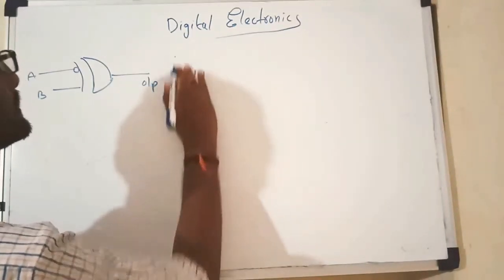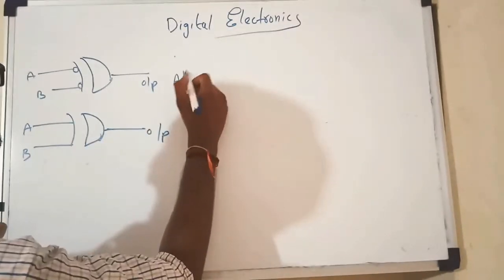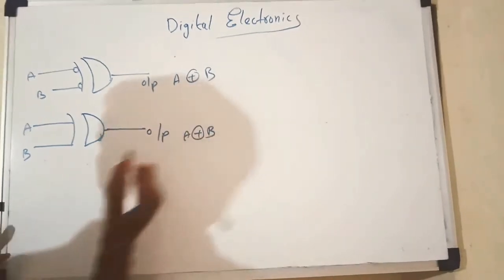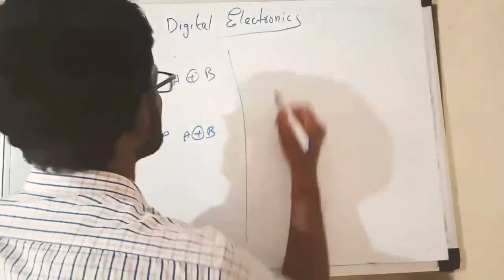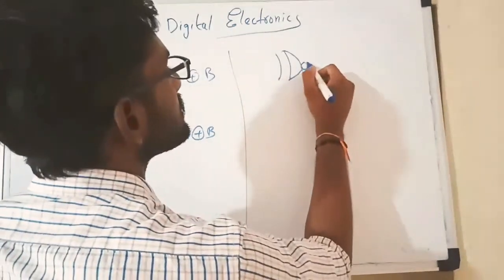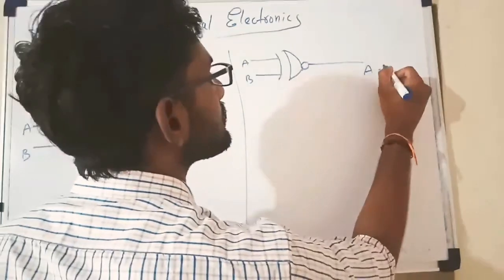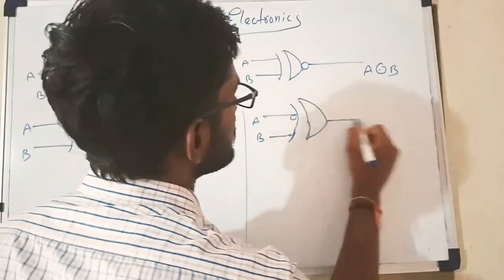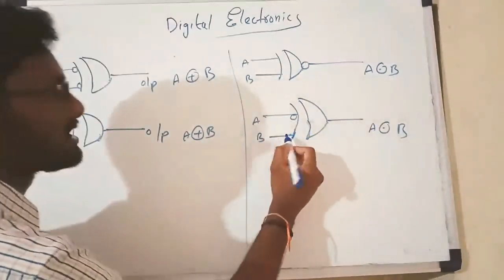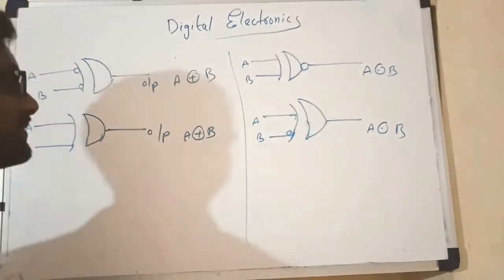From this, what we conclude is: for the XOR gate with inputs A and B and a bubble added at one input, the output changes. Both the symbol with a bubble at one side and the equivalent representation represent the same XOR gate. Similarly, we know that this is an XNOR gate. In other words, you can also write it as an XOR gate with a bubble. If the bubble is moved here, these are also the same — both represent the XNOR gate.